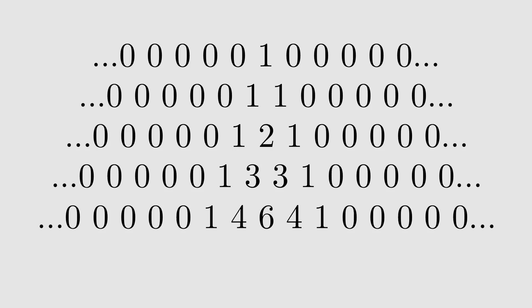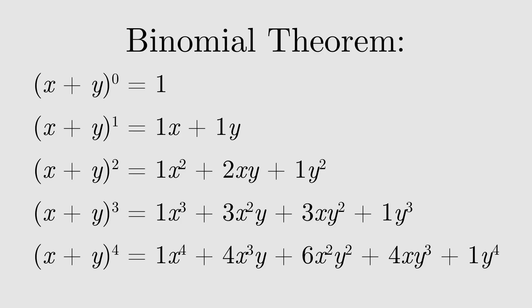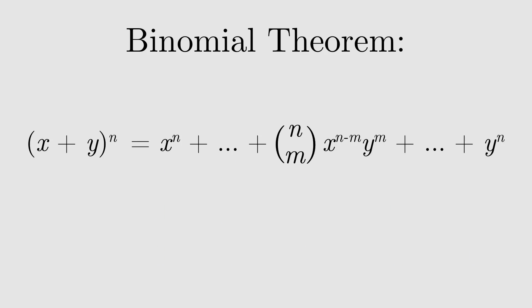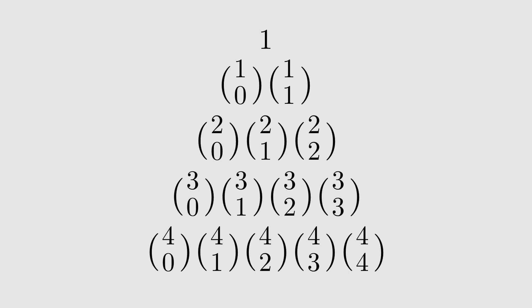So what do all of these three facts have in common? They're all related to how the rows of Pascal's triangle are generated. One way to do this is to use the binomial theorem, which tells us how to algebraically expand (x + y) to the power n. You see that the coefficients, usually called binomial coefficients, are numbers from Pascal's triangle. We denote the coefficient for the mth term as n choose m, because it represents the number of ways of picking m objects from a group of n.